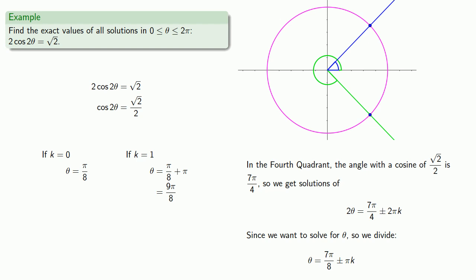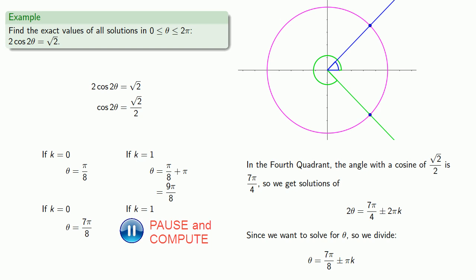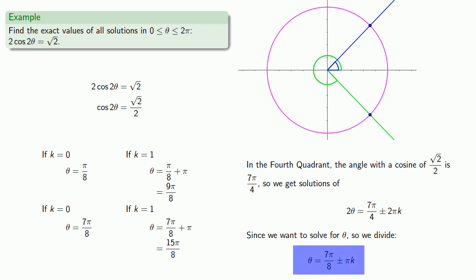If k = 0, we get 7π/8. If k = 1, we get 7π/8 + π = 15π/8. If k = 2, we'd be adding 2π, which will certainly take us outside the interval, so we don't need to worry about k = 2.